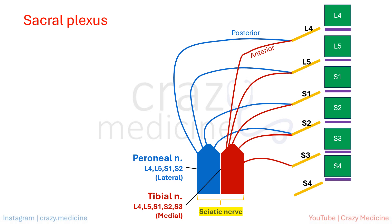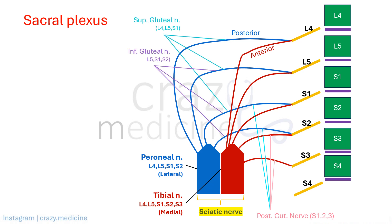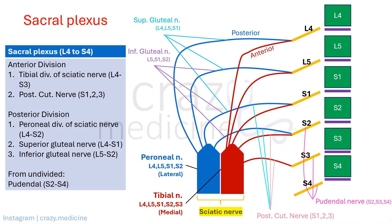Both nerves together form the sciatic nerve. There are other nerves from both anterior and posterior divisions. The posterior cutaneous nerve arises from the anterior division apart from the tibial component of the sciatic nerve. The superior and inferior gluteal nerves arise from the posterior division apart from the peroneal component. The pudendal nerve arises directly from the anterior rami. This forms our sacral plexus.